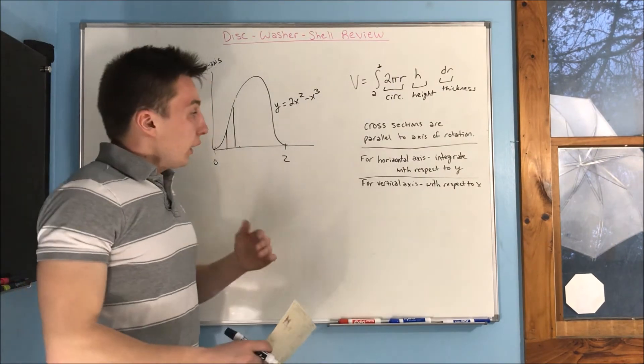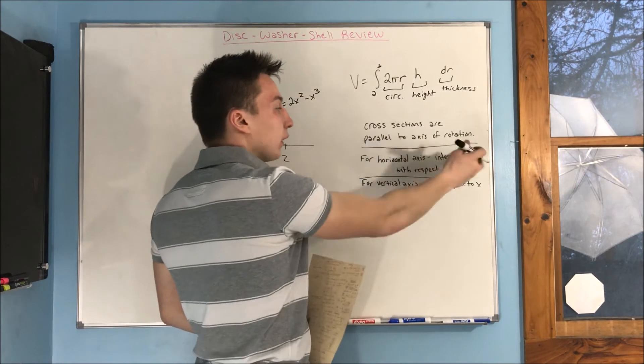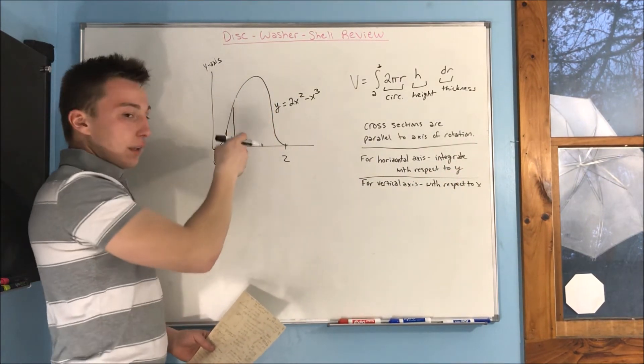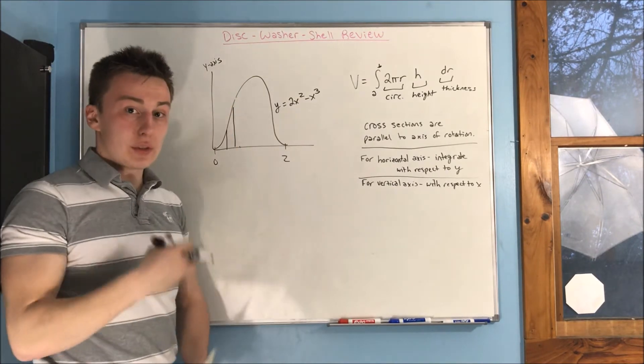So, for shell method, everything is basically going to be different here. Cross sections are parallel to the axis of rotation, right? This is our cross sections, right? They're vertical, and our axis of rotation is also vertical. So, they're parallel.